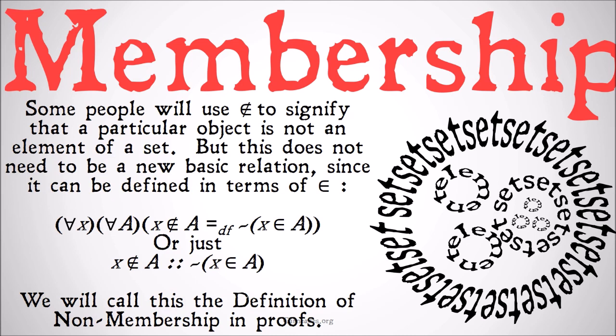Some people use the curvy E with a slash through it (∉) to signify that a particular object is not an element of a set. This does not need to be a new basic relation, since we define it in terms of membership. For all X and all A, 'X is not a member of A' is defined as 'it is not the case that X is a member of A' — just a rule of replacement. We can switch back and forth between the two forms; we don't need a new basic relation, we're simply negating the original membership statement.